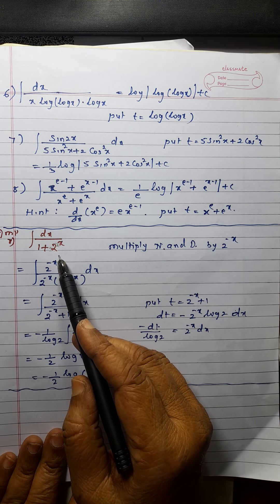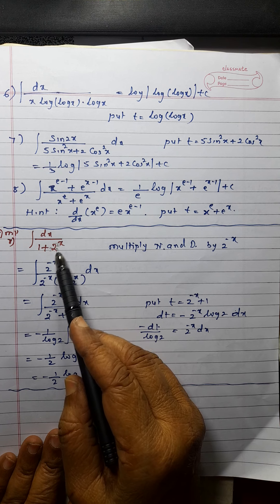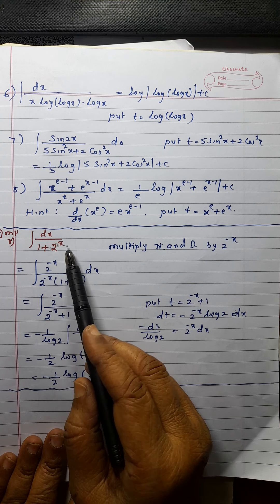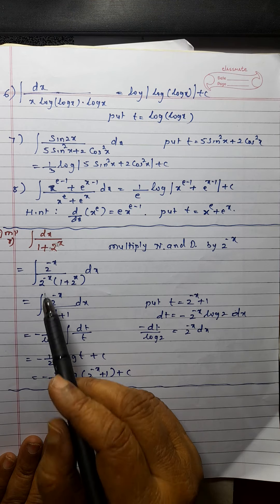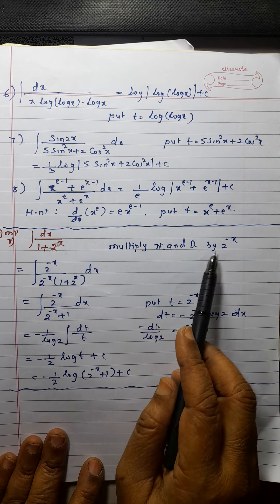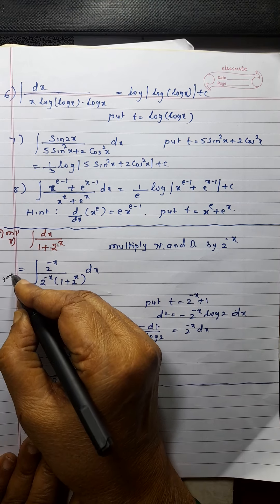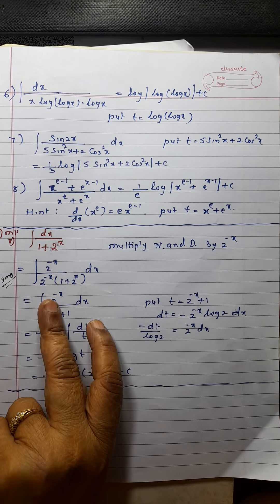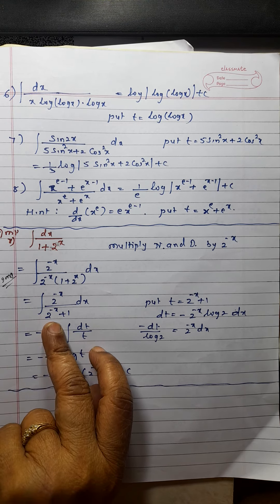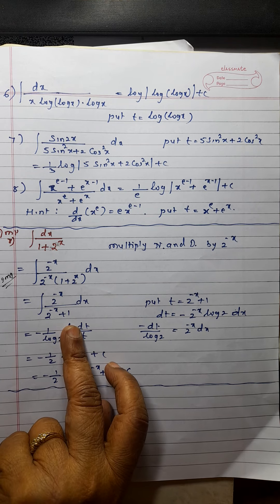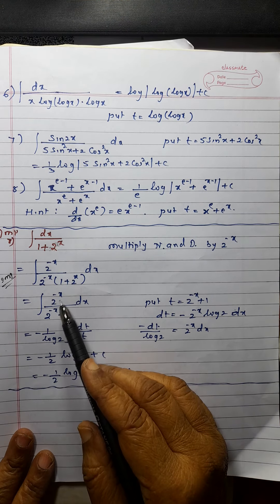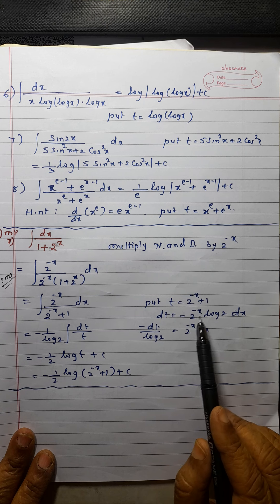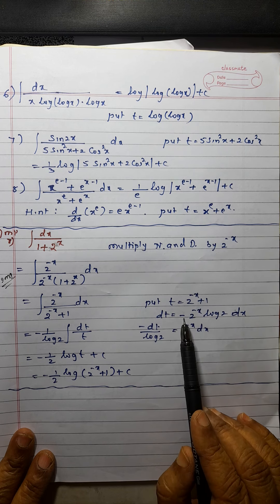This is a very very important problem. Sometimes instead of 2 raised to x it will be 7 raised to x, e raised to x, or anything. What you have to do: you know a raised to x derivative is a raised to x log a. So a raised to x should be in the numerator. So what I will do here — I will multiply the numerator and denominator by 2 raised to minus x. This is a very important step. Substitute this equal to t.